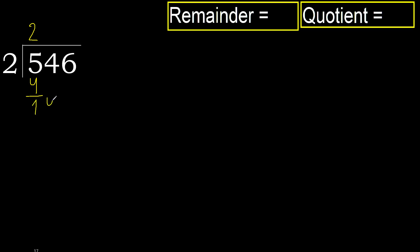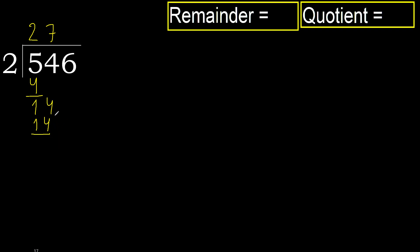Next: 14. 2 multiply by 8 is 16. 16 is greater. Multiply by 7 is 14. Not greater. Okay. Subtract: 14 minus 14 is 0.